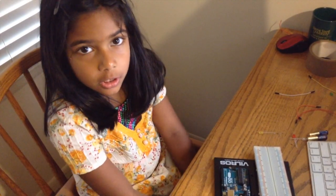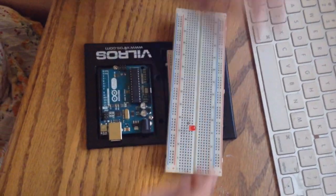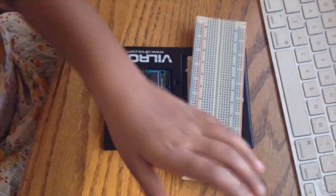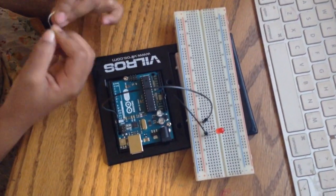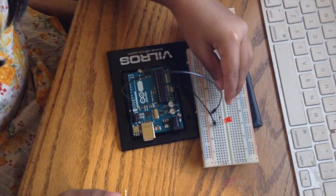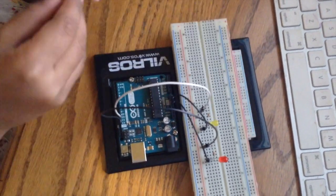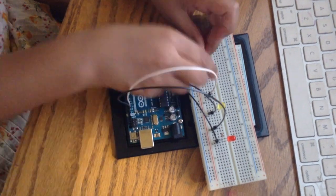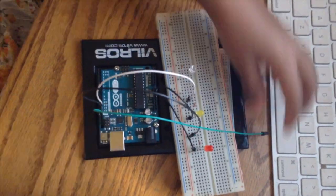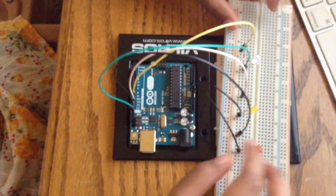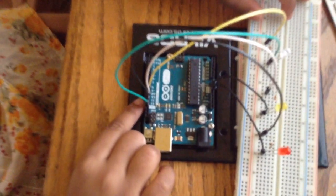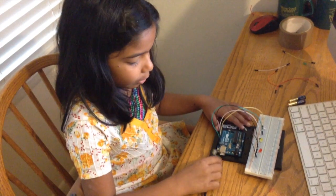A circuit with 3 LEDs. The minus is connected to ground, plus is connected to pins 13, 12, and 10. Now we will upload the program.